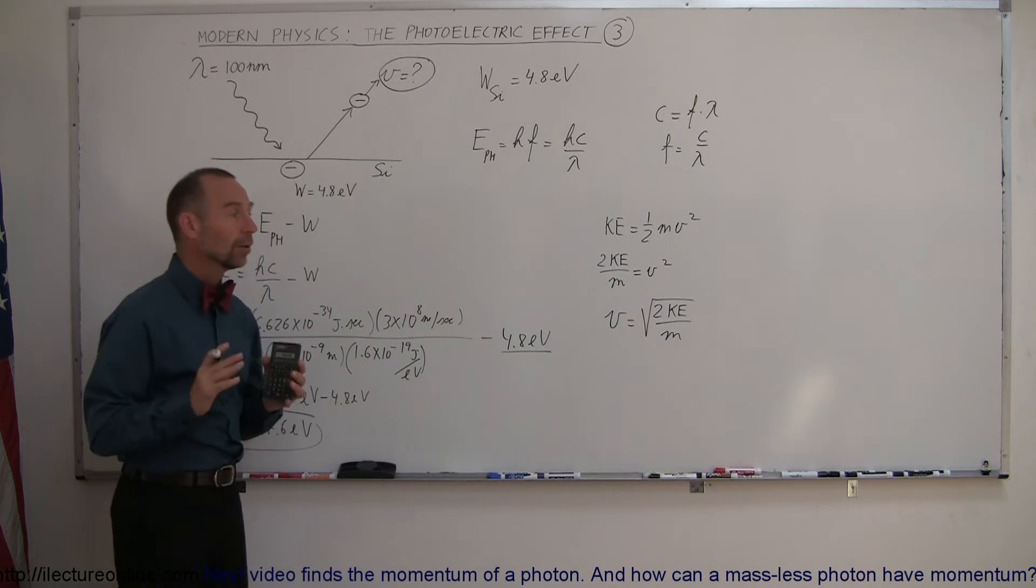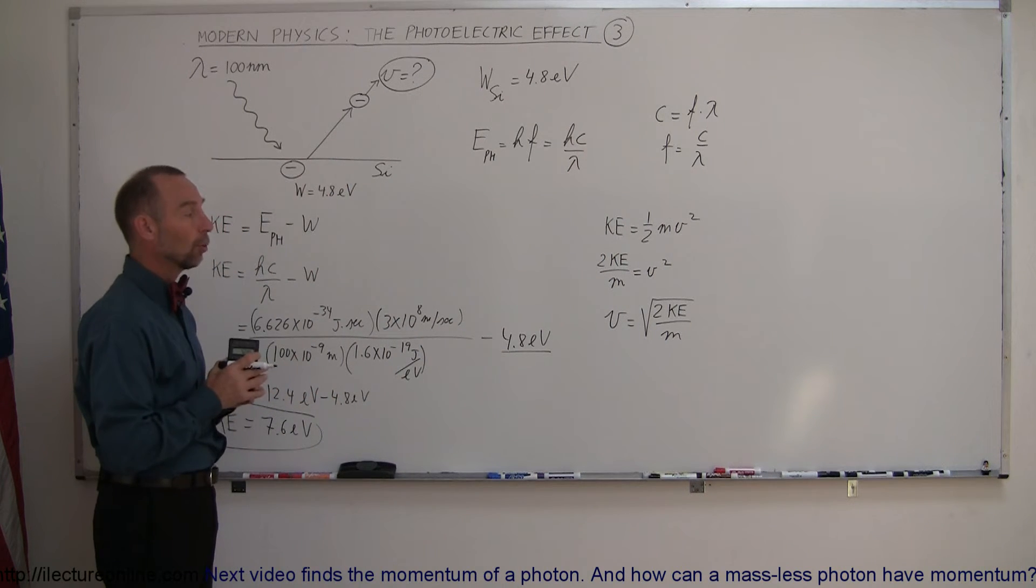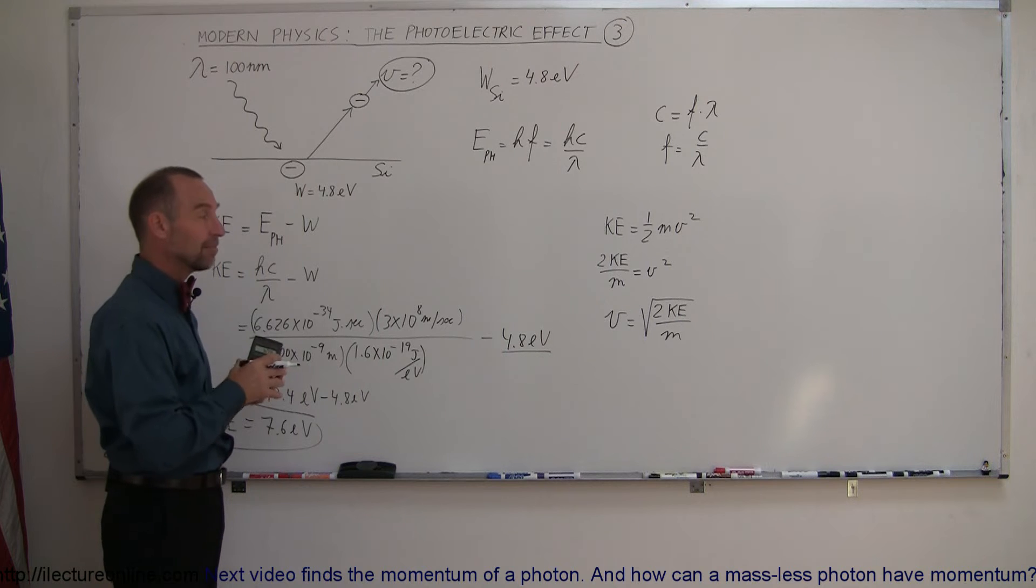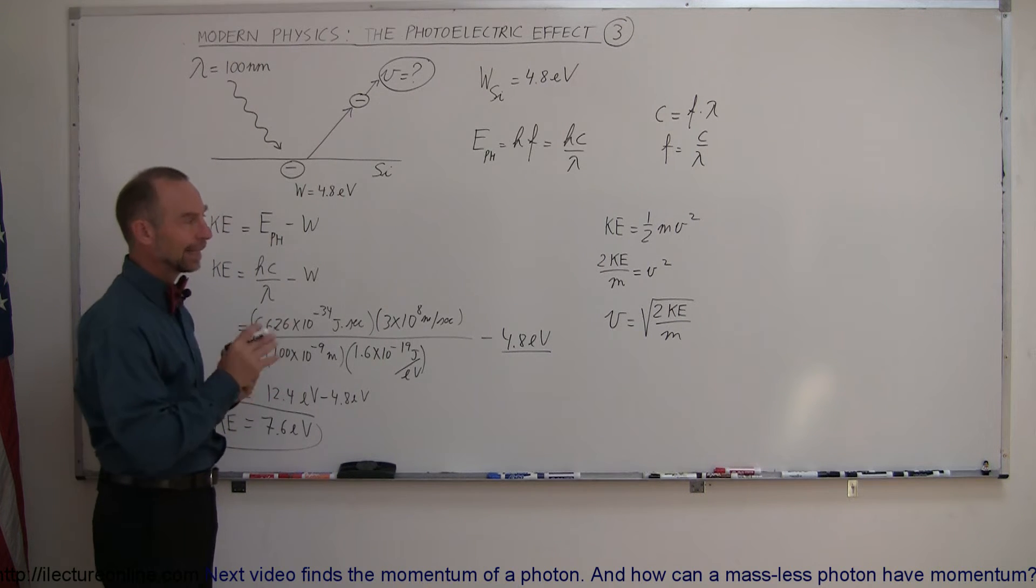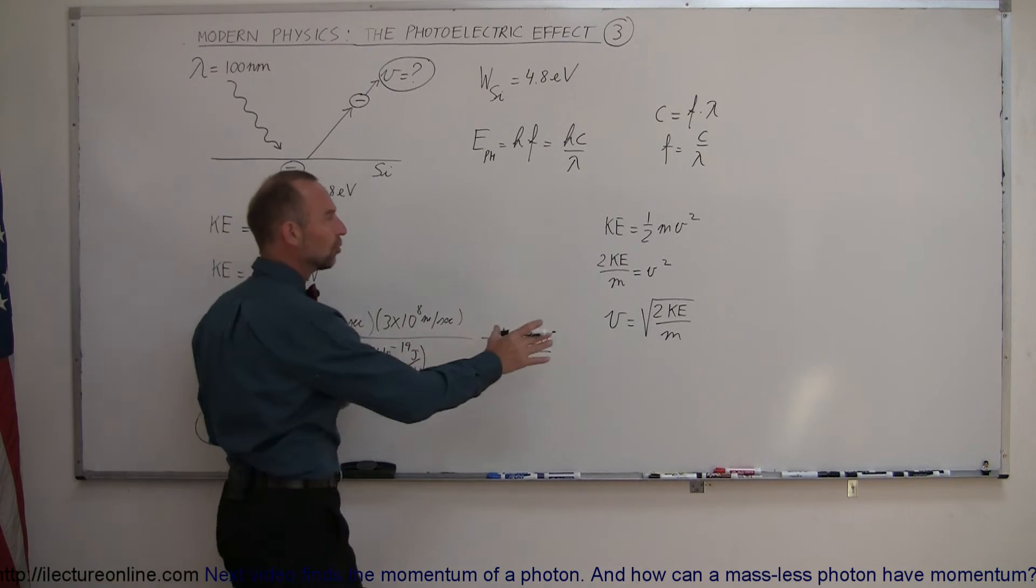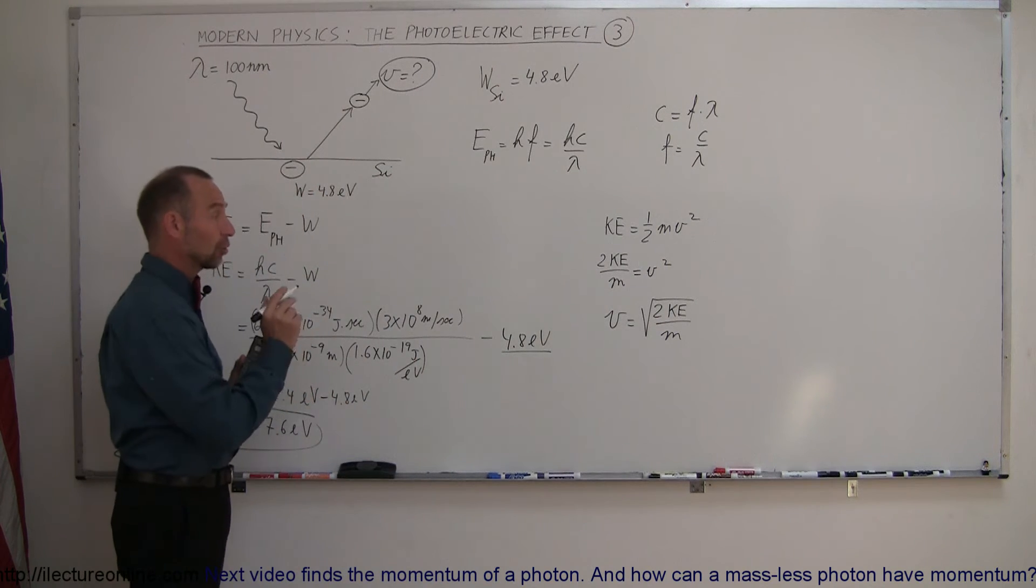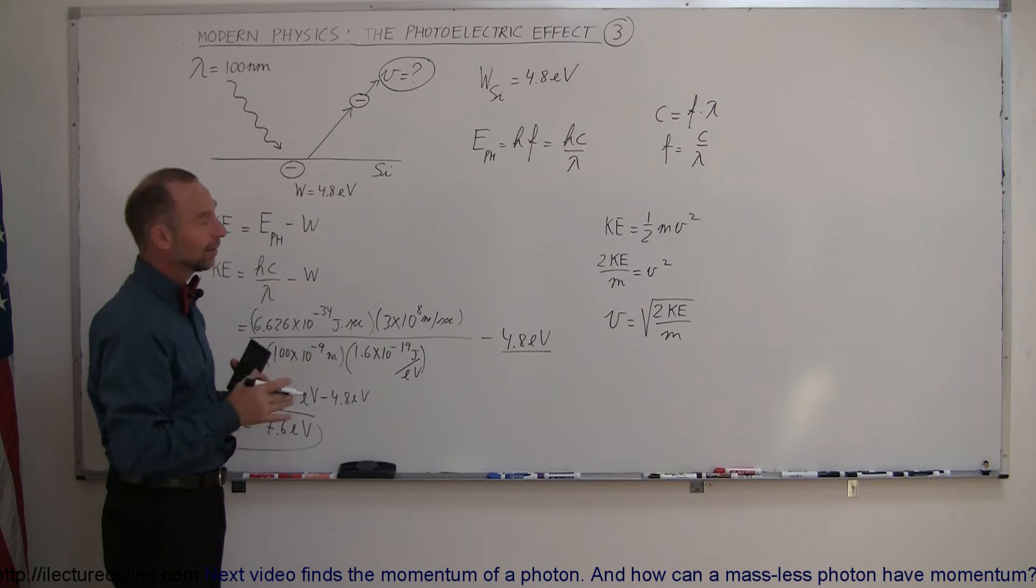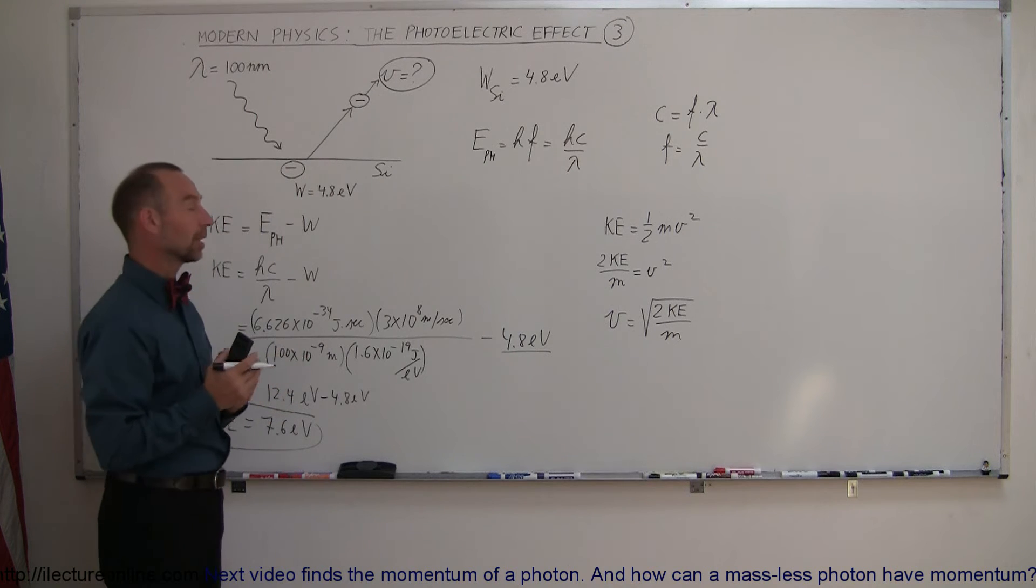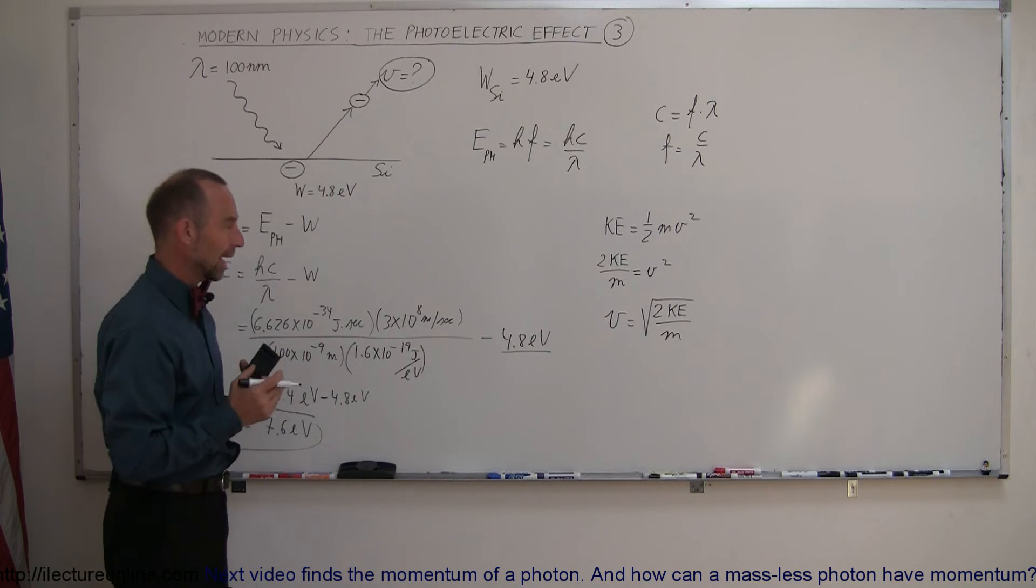Now, one thing of caution here. What if the energy is so much that the velocity is relativistic? Then of course, we have to be careful. We cannot use this equation for kinetic energy. So after we get an answer, we've got to make sure that velocity is not too high. Preferably, it is only 10% of the speed of light. Let's see what we get.